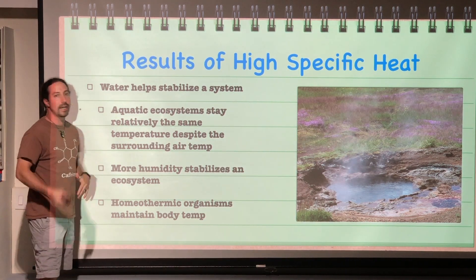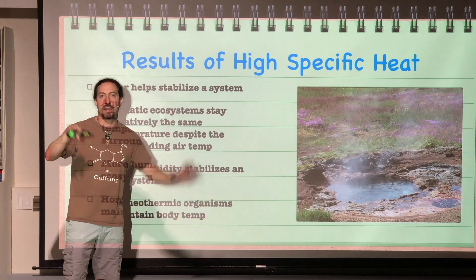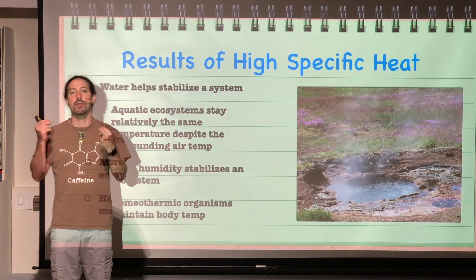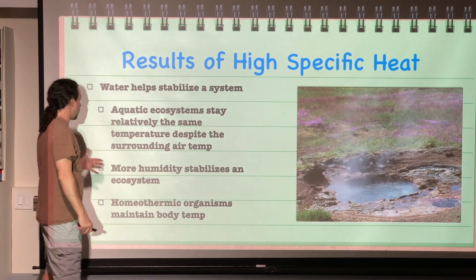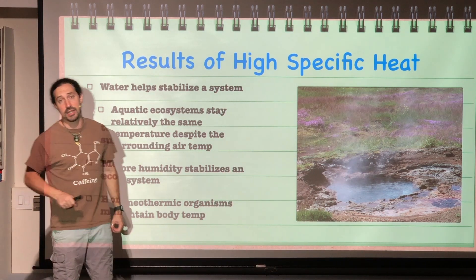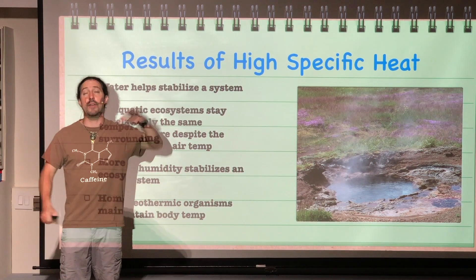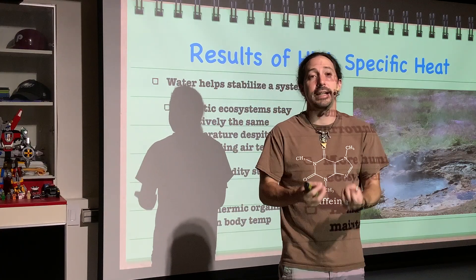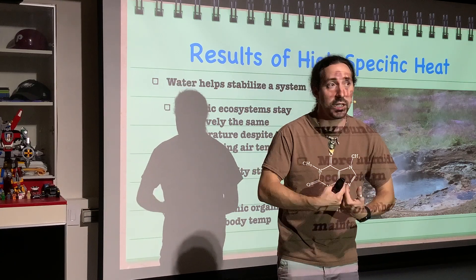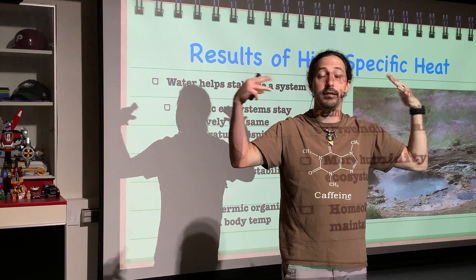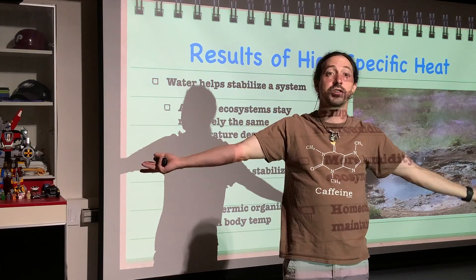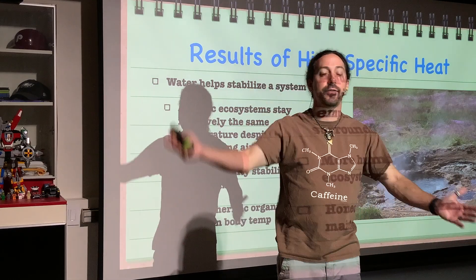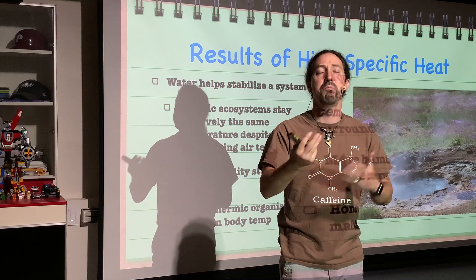Aquatic ecosystems stay relatively the same temperature day and night. Even if you have large fluctuations in air temperature, the water temperature stays relatively stable. More humidity also stabilizes an ecosystem. In deserts where there is no humidity, you can have massive temperature fluctuations because there's no water vapor to hold the heat in. Once the sun goes down, the heat radiates off the earth and nothing holds it in. That's why the temperature swing in a desert is extremely large, whereas in humid areas, temperature swings are much, much smaller.